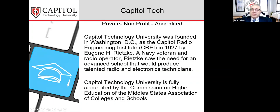Capital Tech was founded in 1927 by a Navy vet down in DC and later moved to Laurel, Maryland, about 15 miles north of DC. We have a 52-acre campus right between NSA and NASA, and many of our students go to work for either agency. We have degrees at the bachelor's, master's, and doctoral level. All master's and doctoral programs are completely online, and some undergraduate programs like this one are offered in an online modality as well.